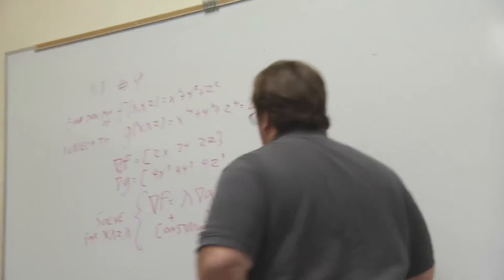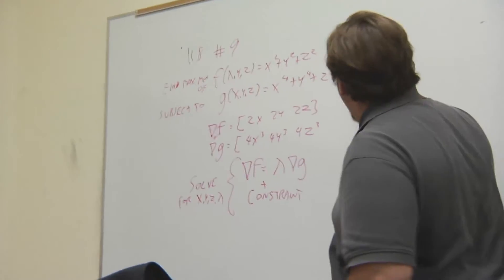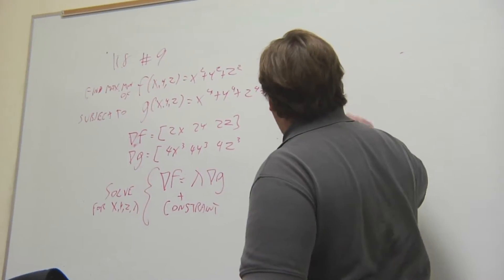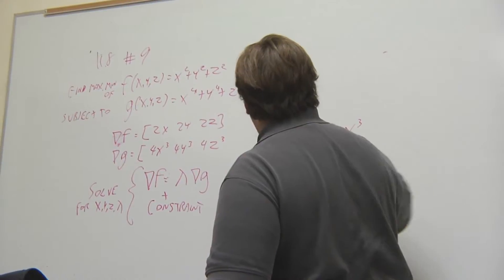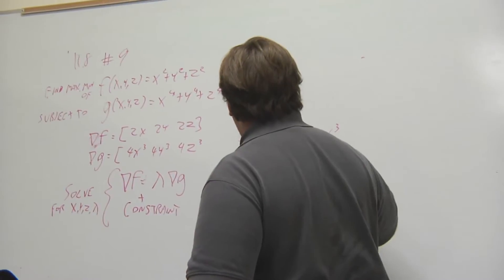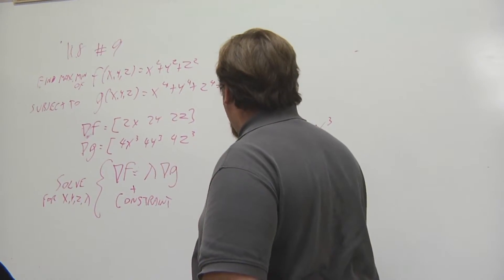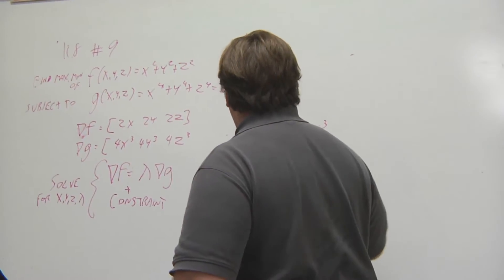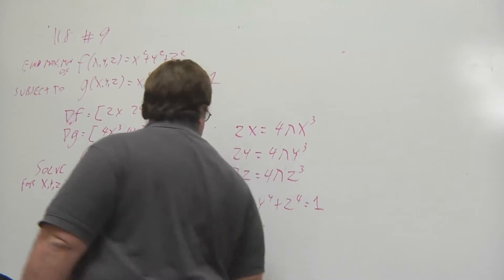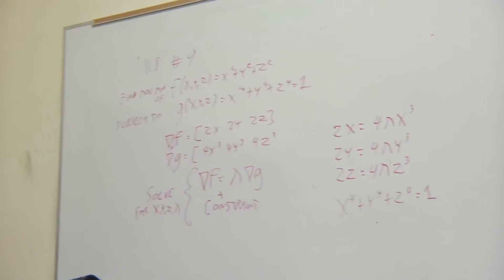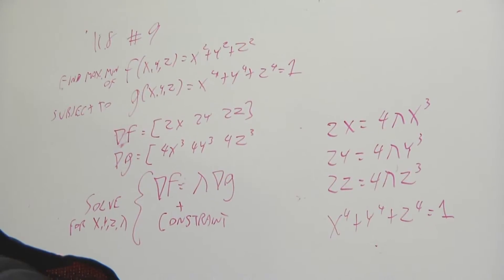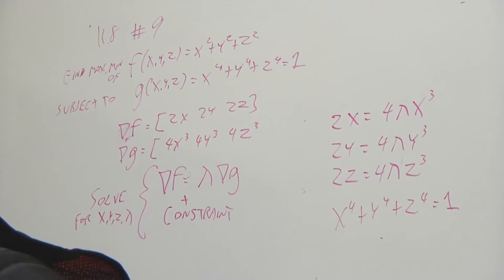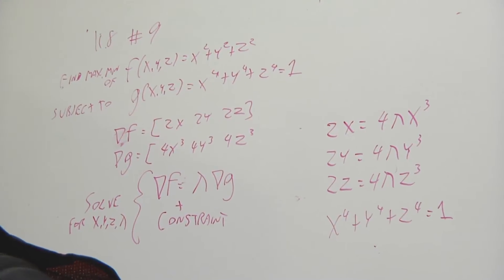Alright. So, what the system looks like in this case is 2x equals 4 lambda x cubed, 2y equals 4 lambda y cubed, 2z equals 4 lambda z cubed. And then you also have the constraint, x to the 4th plus y to the 4th plus z to the 4th equals 1. So, we need to look at these equations and see, this problem gets to be kind of a pain because it all depends on what equations you actually end up with, how nasty the algebra turns out to be.